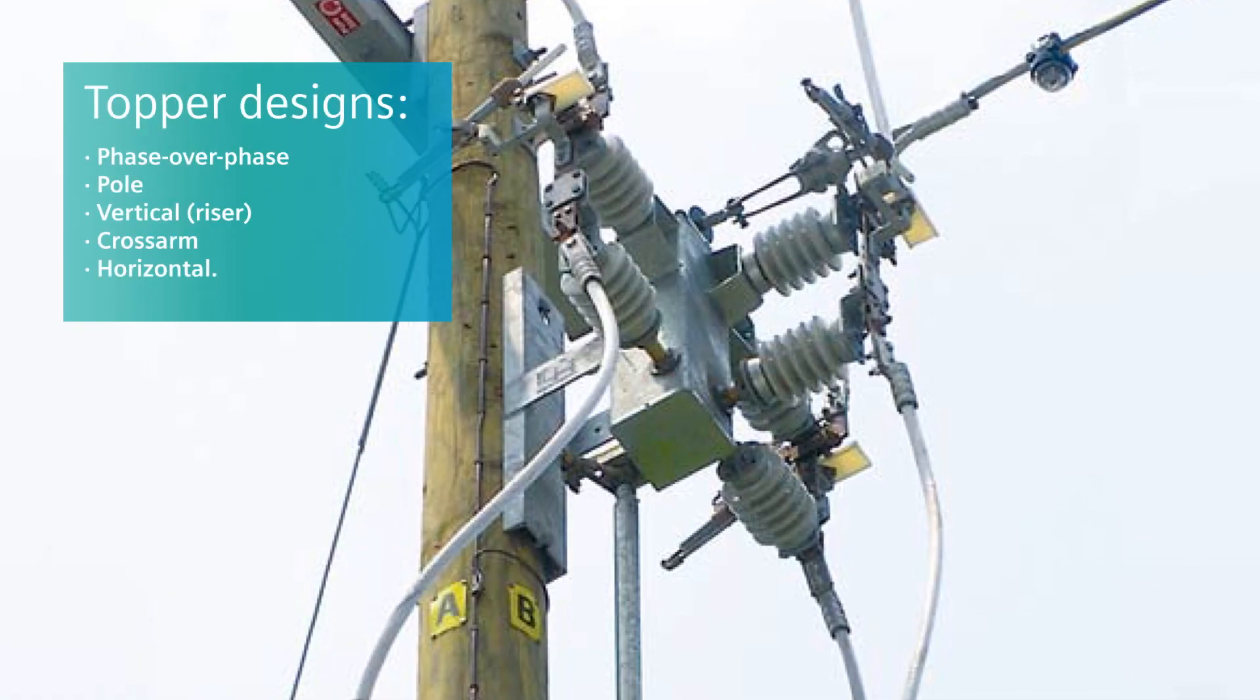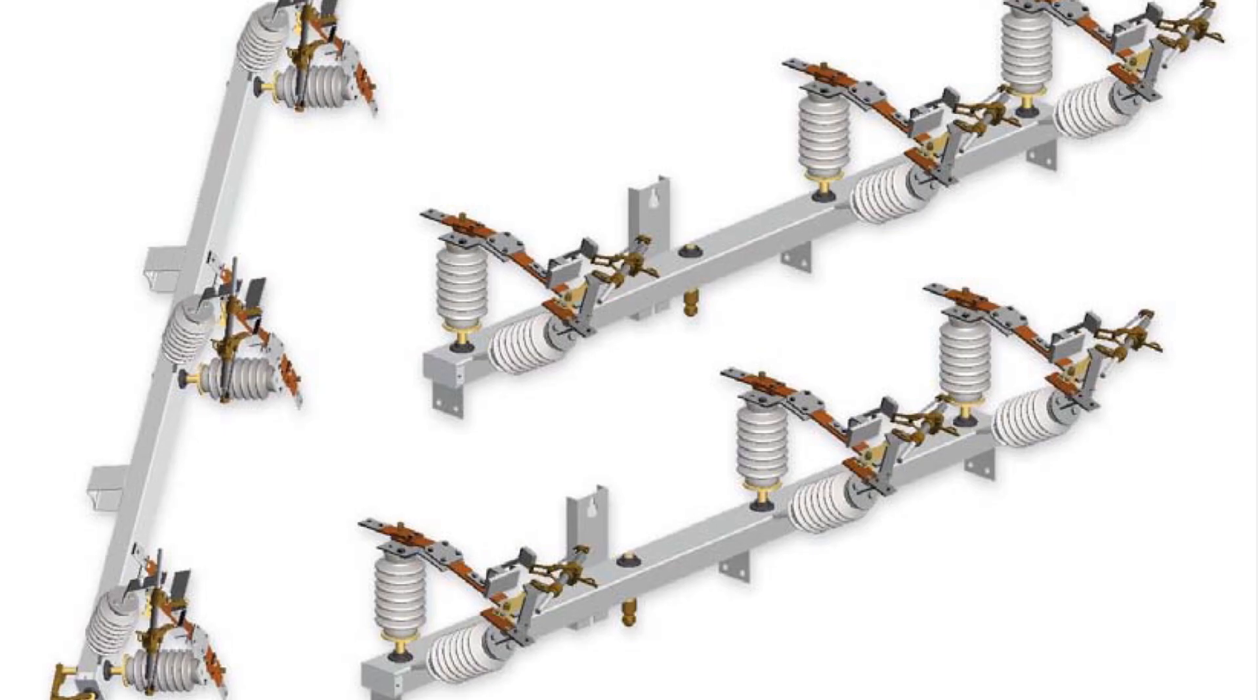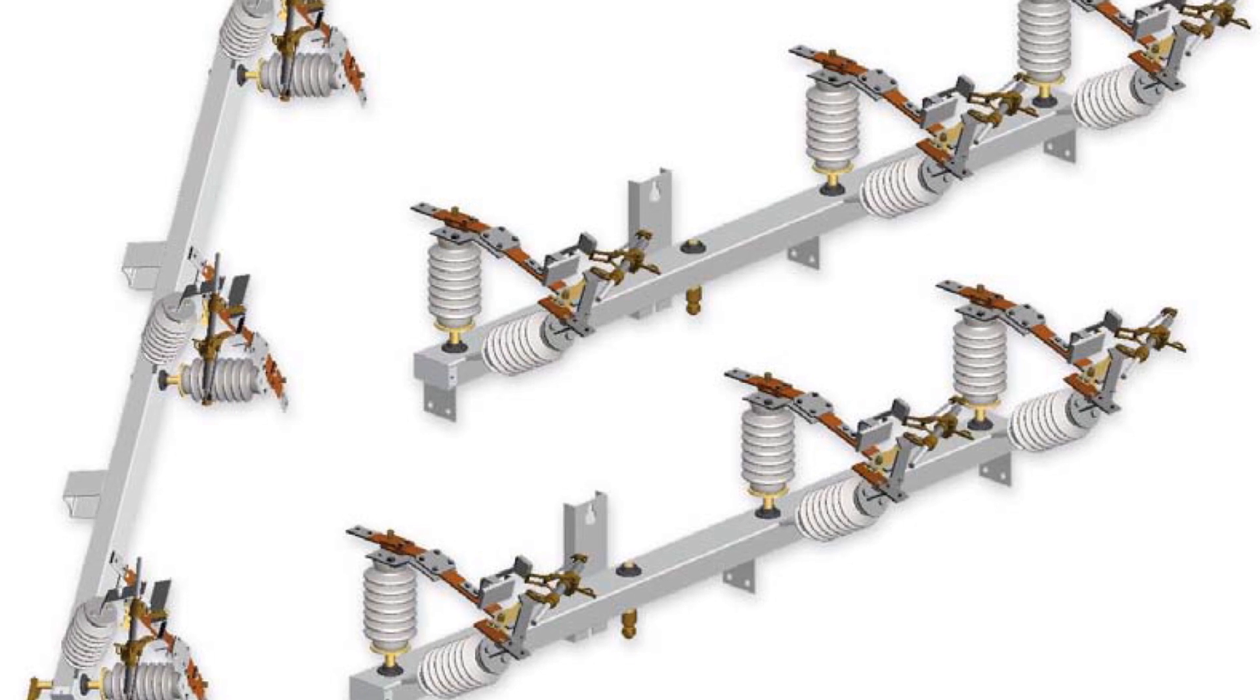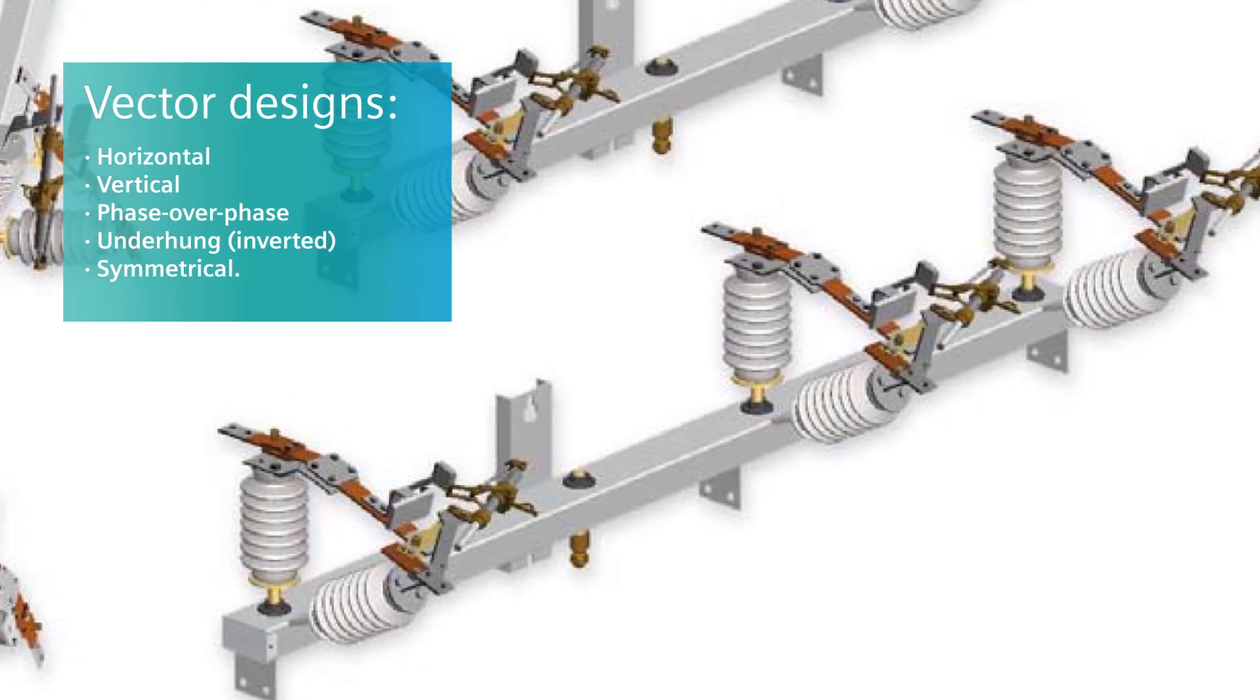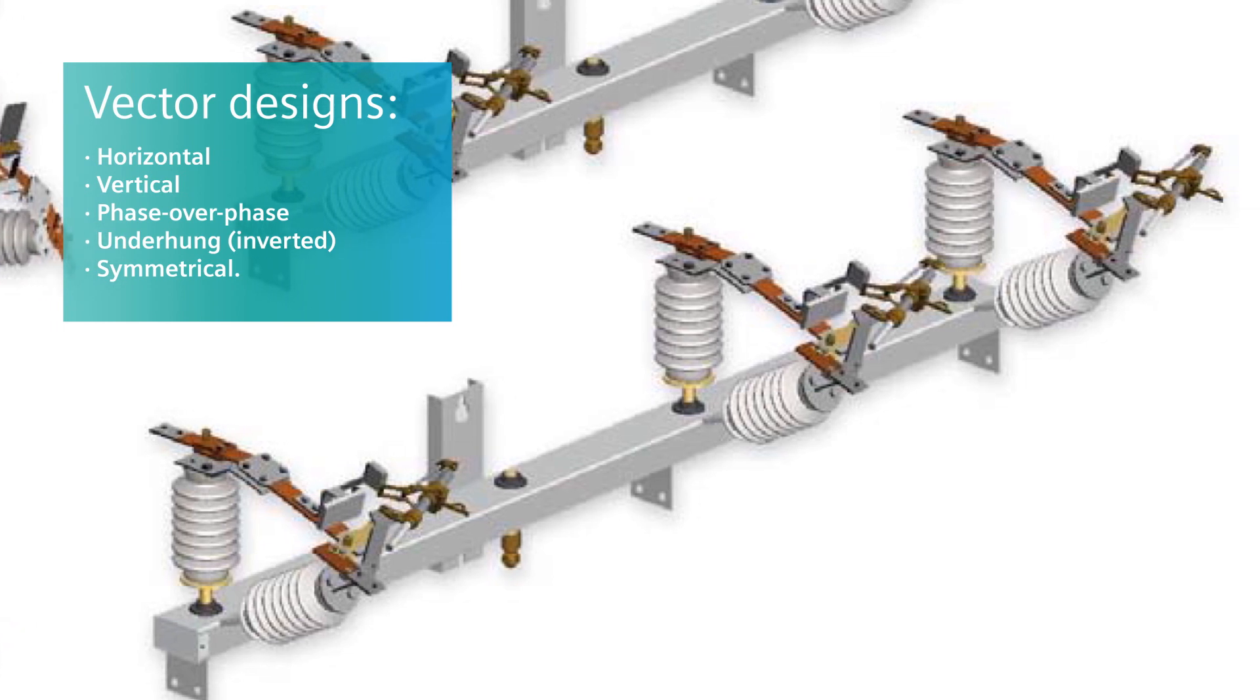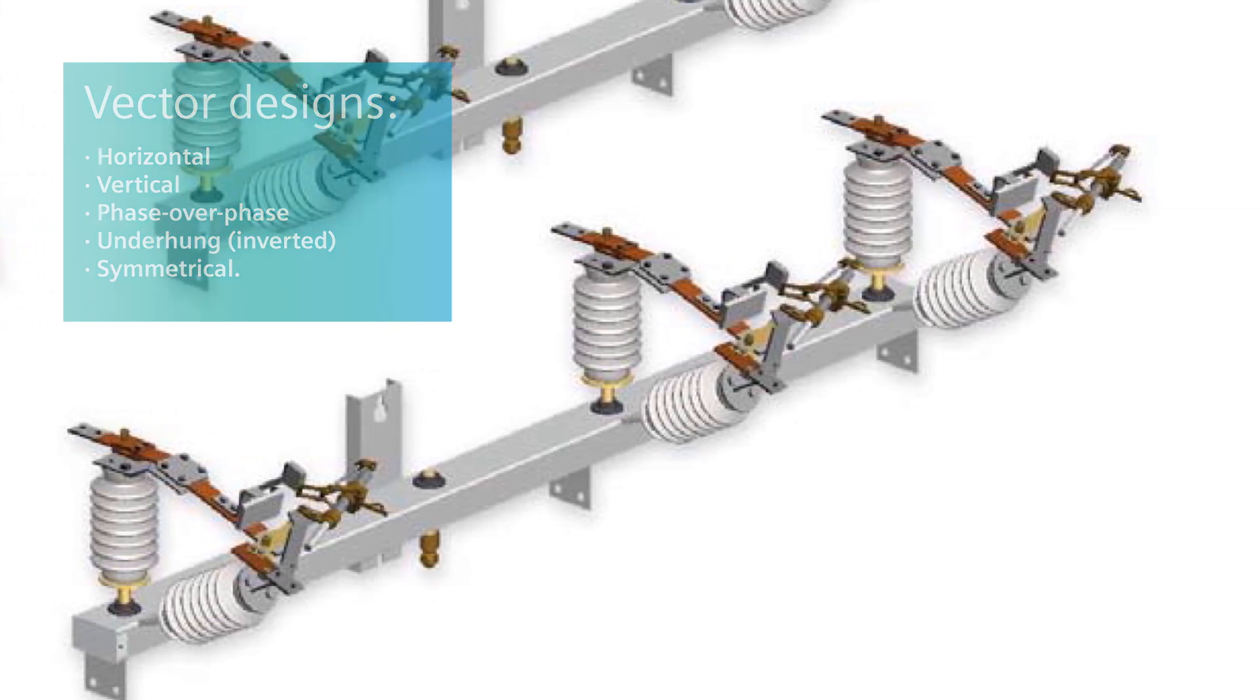The topper is available in five variants for overhead distribution circuits. A cost-effective alternative is the vector. It has most of the same robust features with optional load brake interrupters which can be bolt-on or plug-in. The vector is offered in five overhead designs.